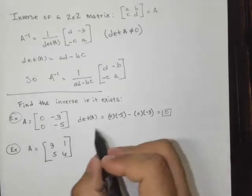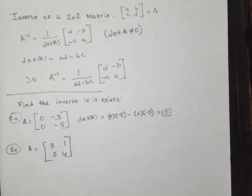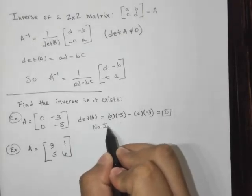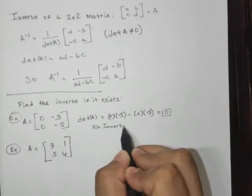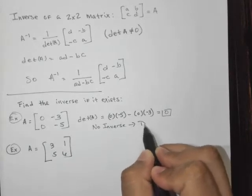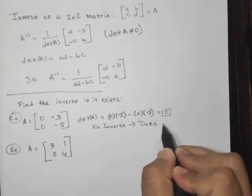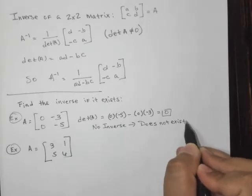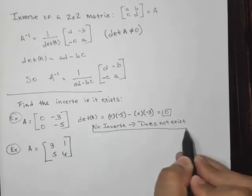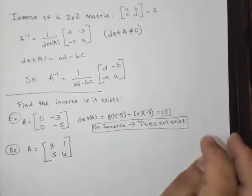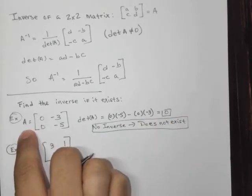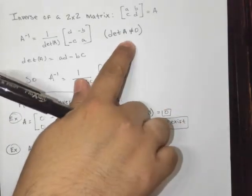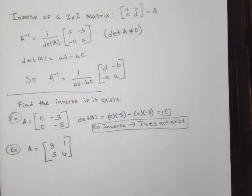So we say then that there is no inverse. It does not exist. And the reason is because the determinant of matrix A is 0, and that was the requirement by the definition up here of an inverse.